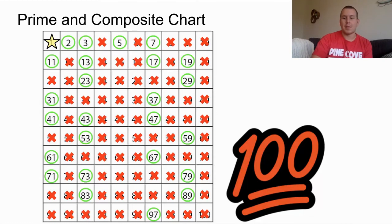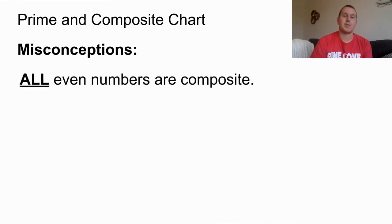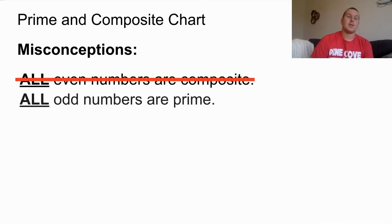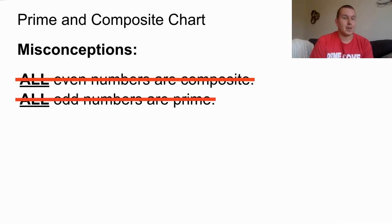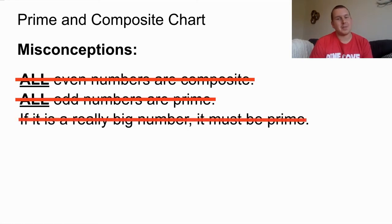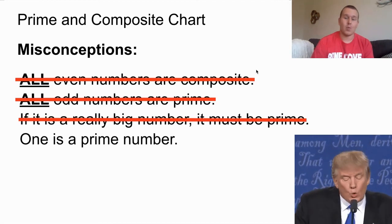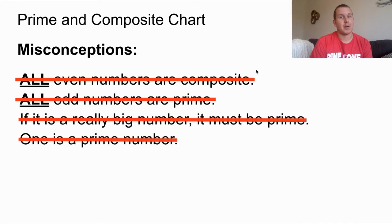There are a couple of important things to remember — misconceptions that most fifth graders will have. First, many think all even numbers are composite, but that's not true: 2 is even and also prime. Second, some think all odd numbers are prime, but that's not true either — numbers ending in 5 are always composite because they're divisible by 5. Third, some think a really big number must be prime — just because it's big doesn't mean it can't be divided by something. And finally, remember that 1 is not a prime number and not a composite number — it's a special number, neither prime nor composite.